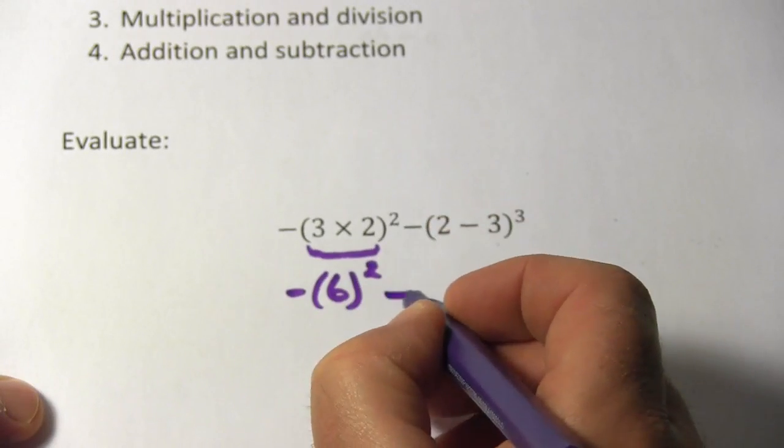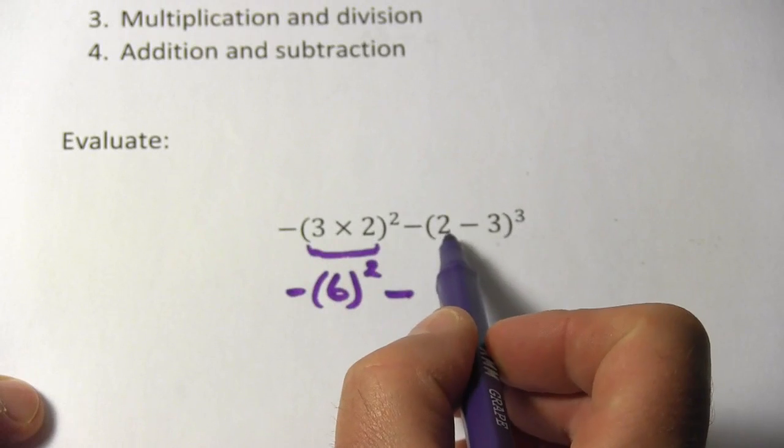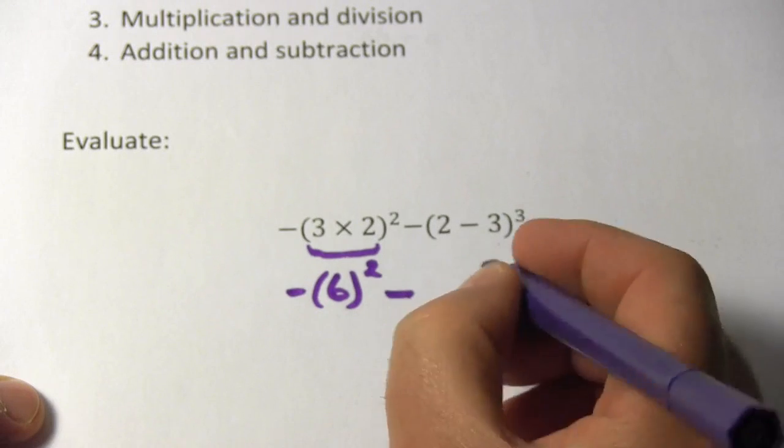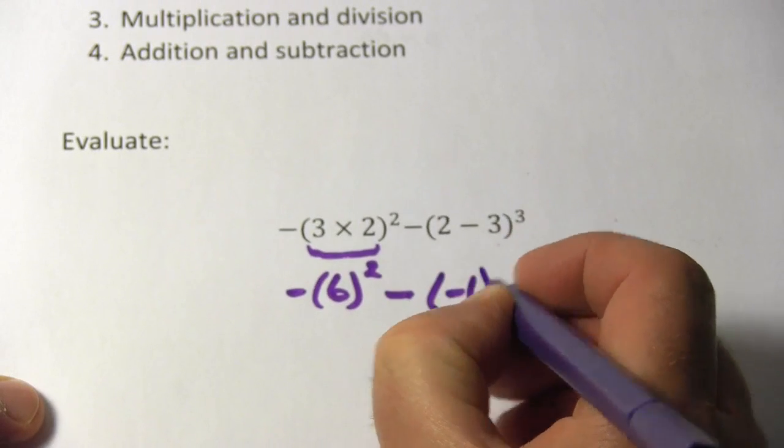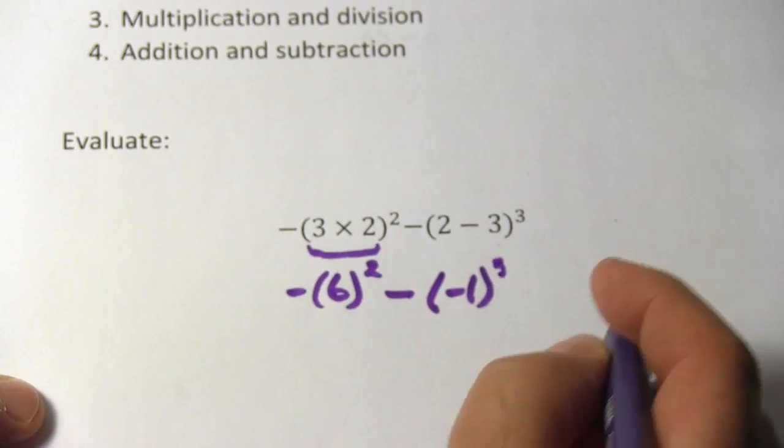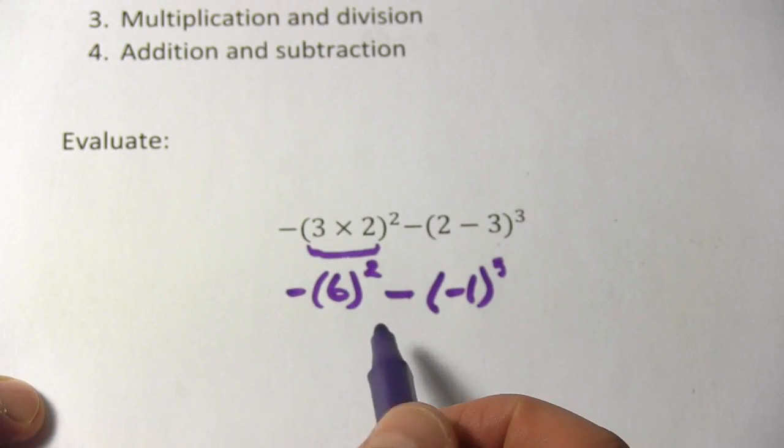the second power there, and then inside this set of parentheses we have 2 minus 3, that's a negative 1, and then we have to the third power. So we did the P in PEMDAS, we did parentheses.